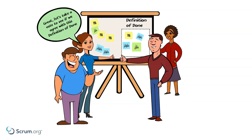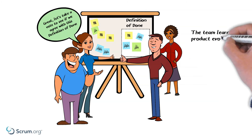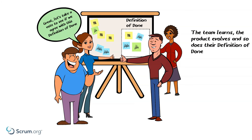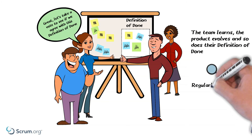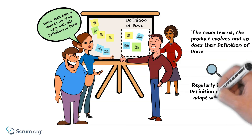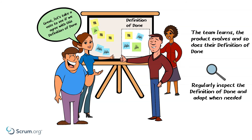Blake, Nisha, Robin, and Steve know that a definition of done itself is likely never done — and that is a good thing, as they should continually strive to improve. Over time the team learns, the product evolves, and so does the definition of done. The team makes sure they regularly inspect and adapt their definition of done.